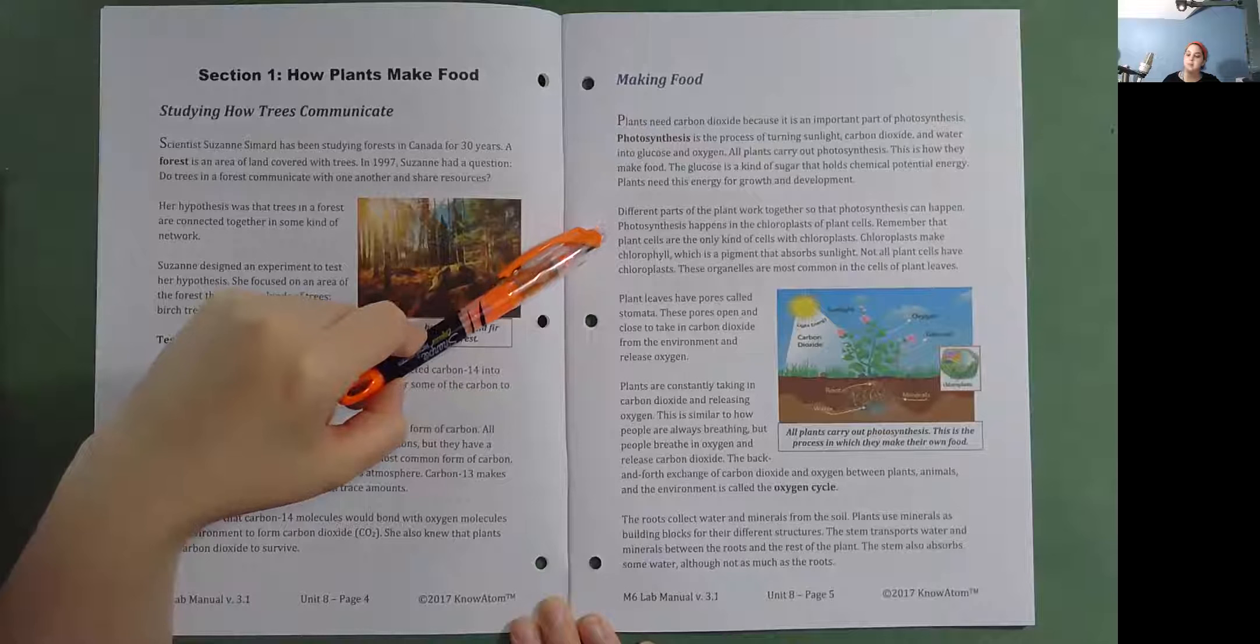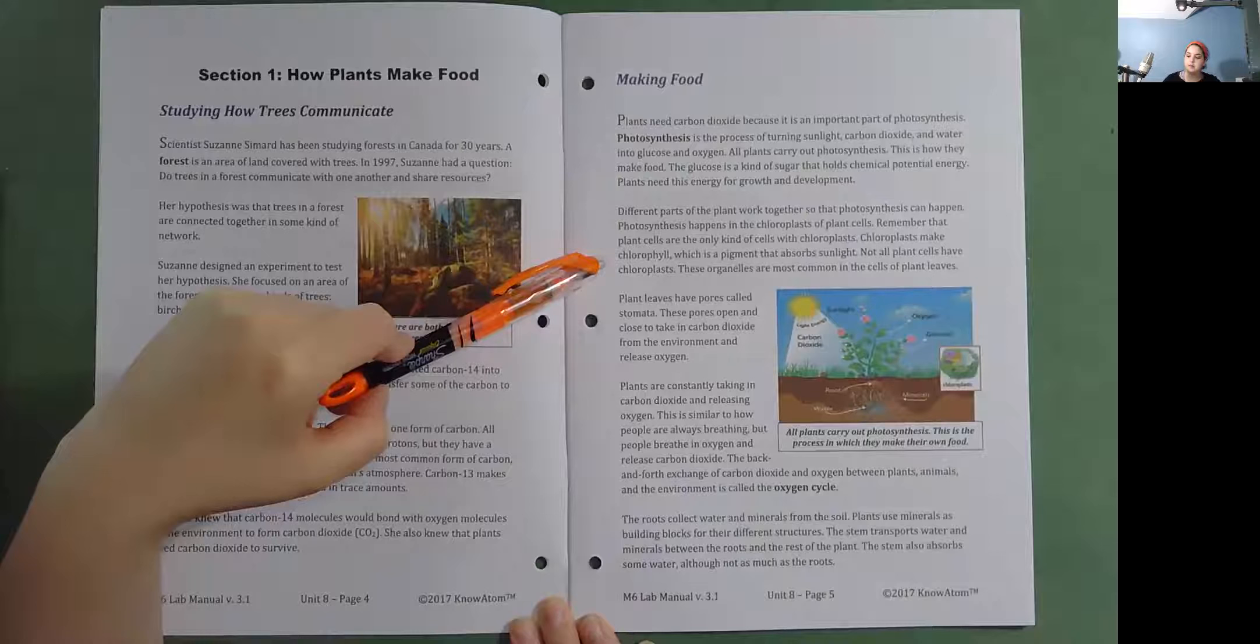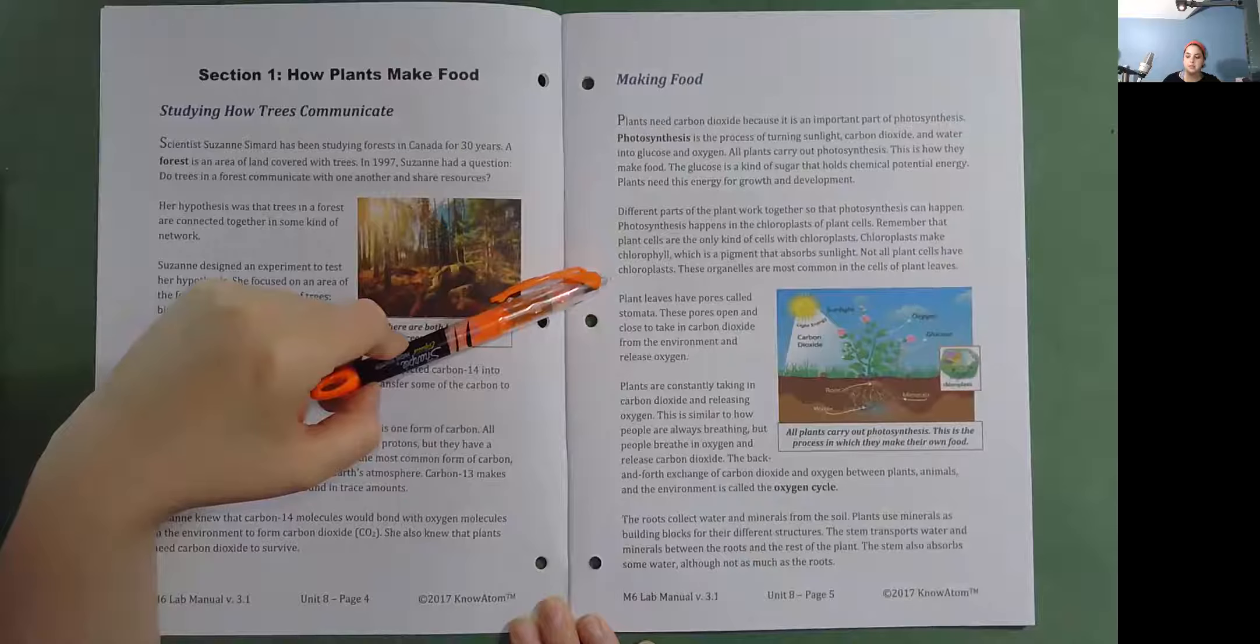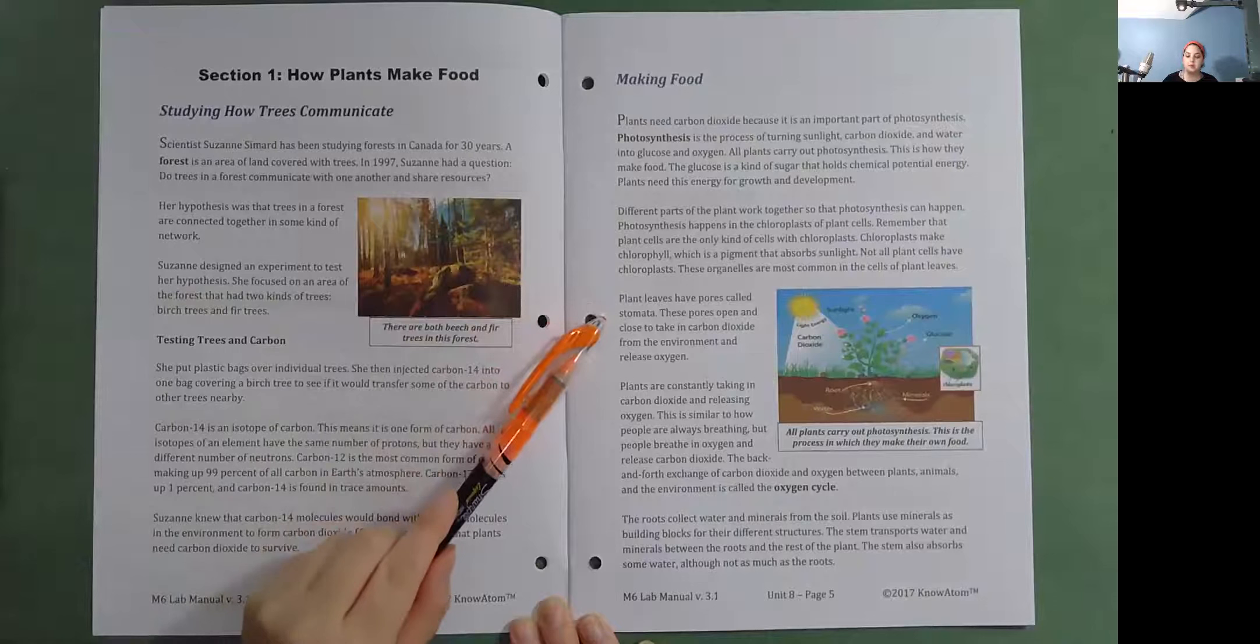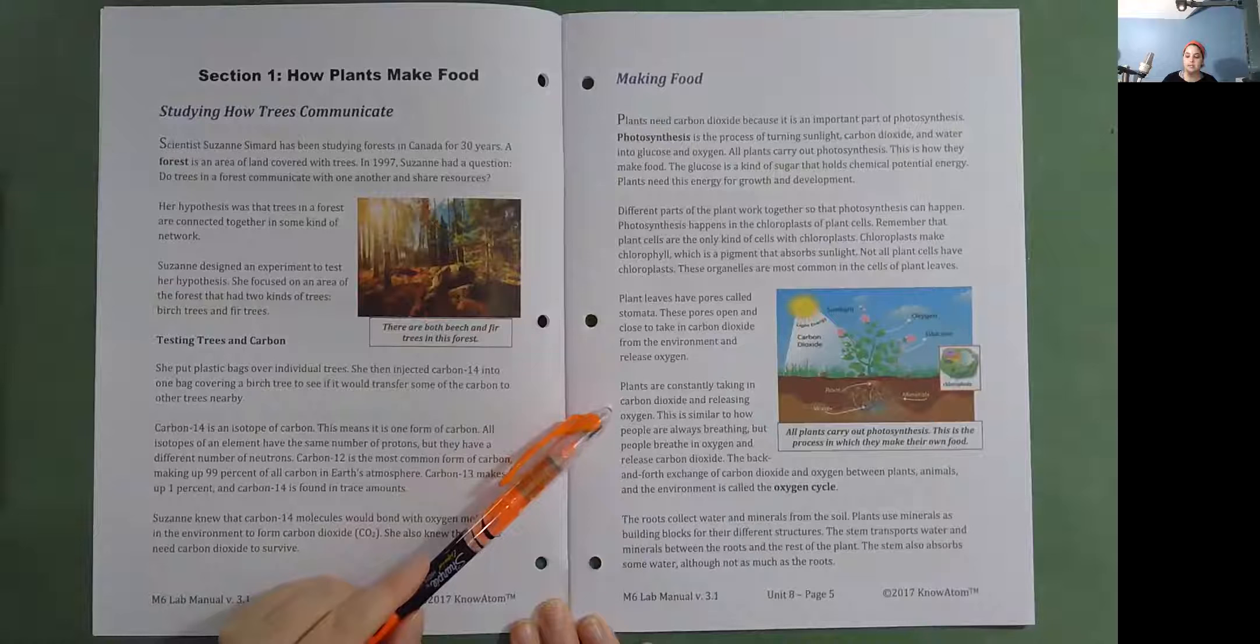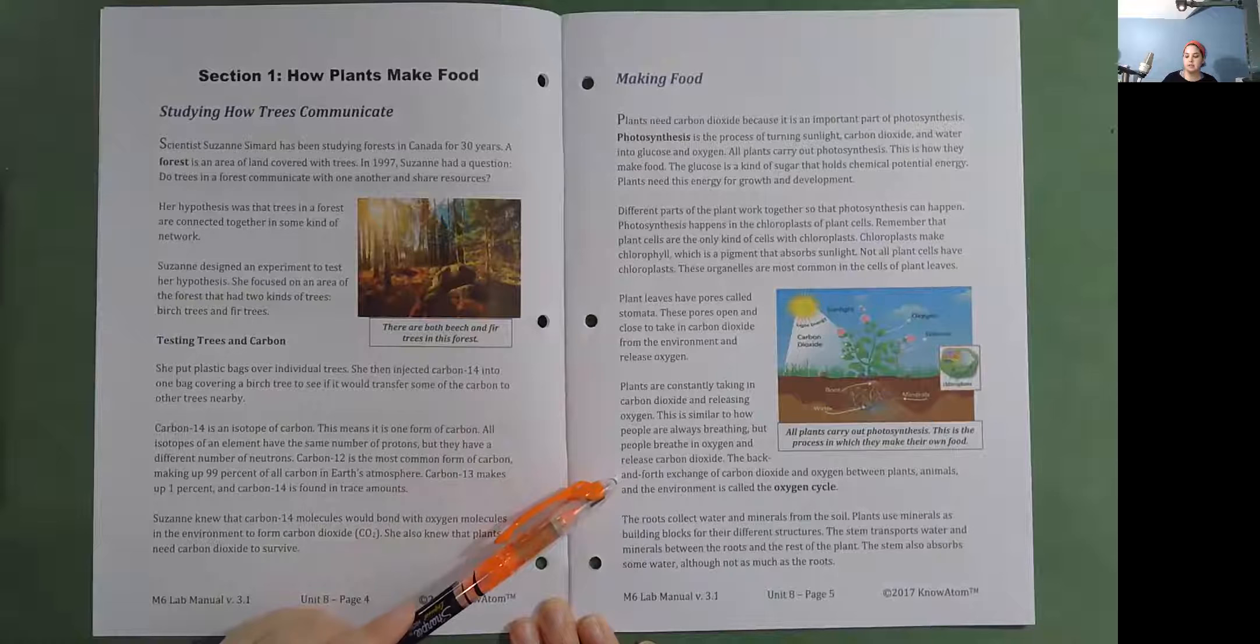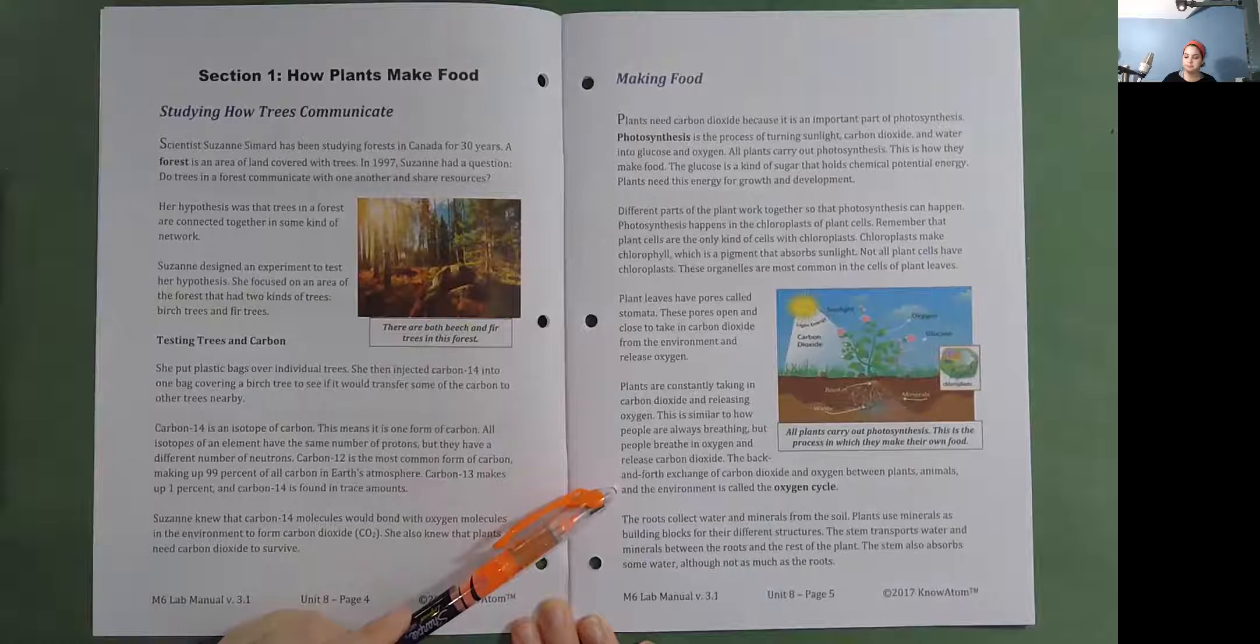Different parts of the plant work together so that photosynthesis can happen. Photosynthesis happens in the chloroplasts of plant cells. Remember that plant cells are the only kind of cells with chloroplasts. Chloroplasts make chlorophyll, which is a pigment that absorbs sunlight. Not all plant cells have chloroplasts. These organelles are most common in the cells of plant leaves. Plant leaves have pores called stomata. These pores open and close to take in carbon dioxide from the environment and release oxygen.